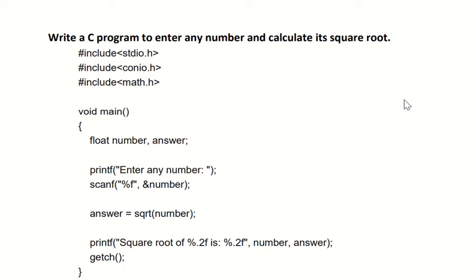Hello everyone, today's topic is writing a C program to enter any number and calculate its square root. In this program, we are asking the user to enter a number, for example 4, and the square root of 4 is 2. Likewise, if you enter a number like 196, the square root of 196 is 14.